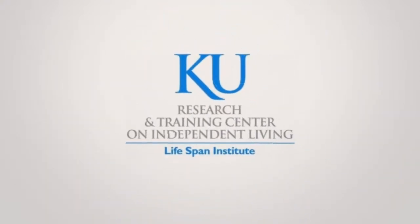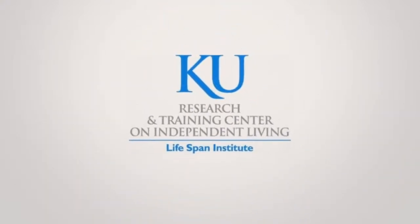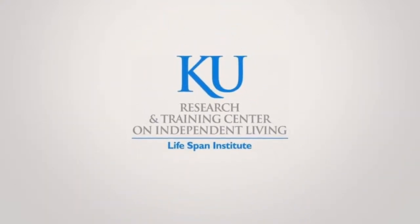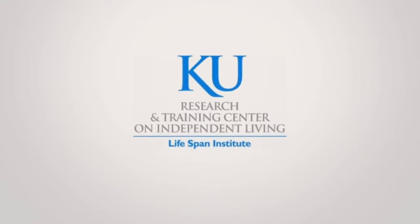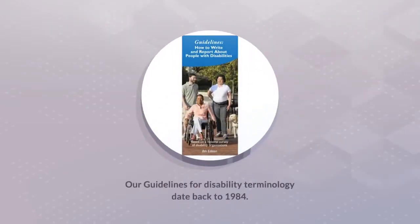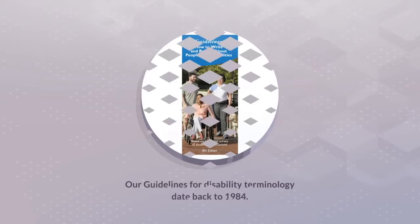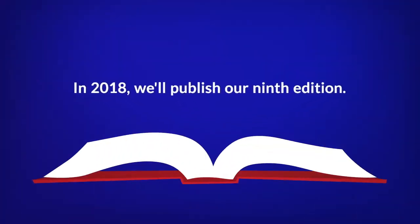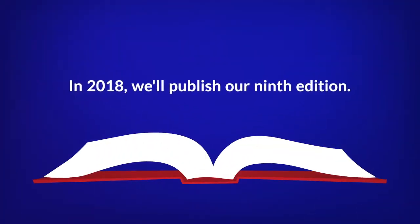The University of Kansas Research and Training Center on Independent Living in the Lifespan Institute presents: how to write and report about people with disabilities. Our guidelines for disability terminology date back to 1984, and in 2018 we'll publish our 9th edition.